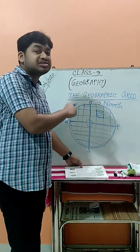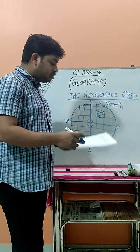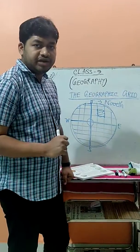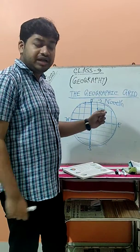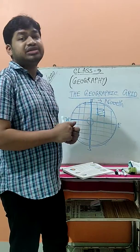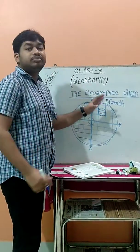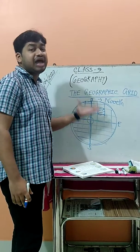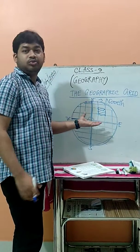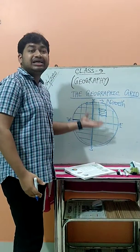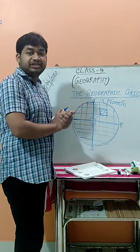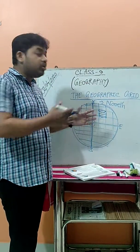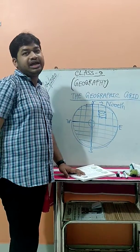Now here we have to read about two things: the first one is latitudes and the second is longitudinal lines. First we discuss the latitudinal line. What is the definition of the latitudinal line? That which horizontal imaginary line passes through from the east to west direction on the Earth's surface — this type of horizontal imaginary line is known as a latitudinal line.